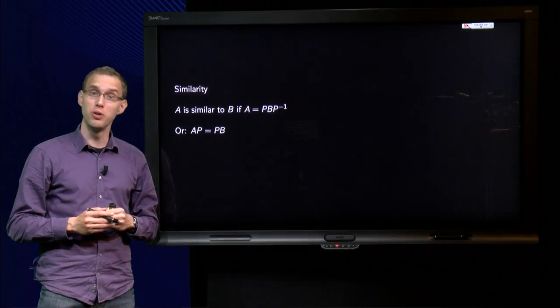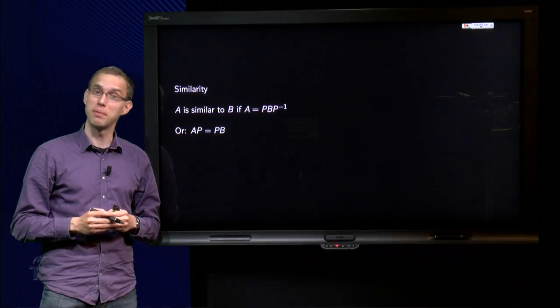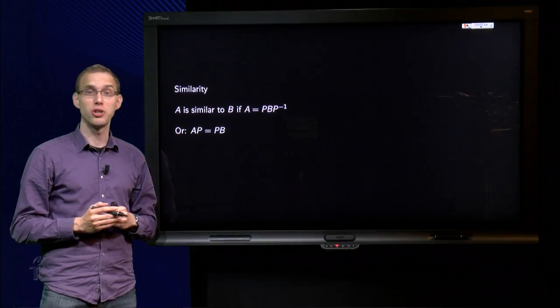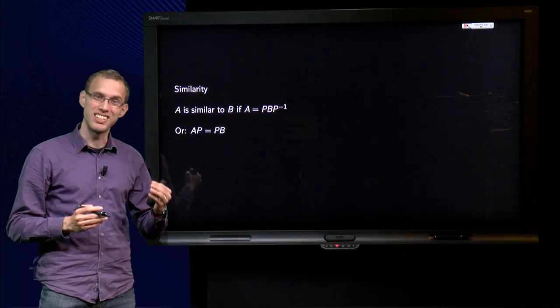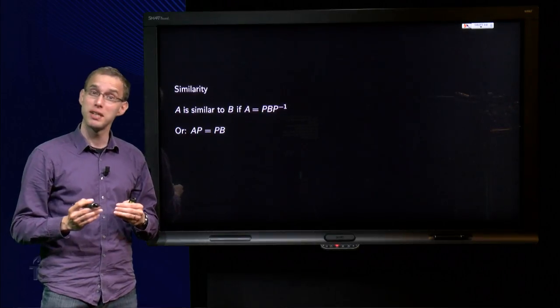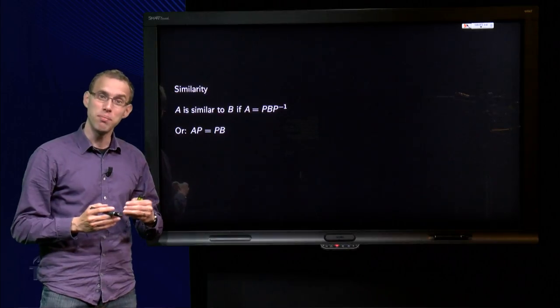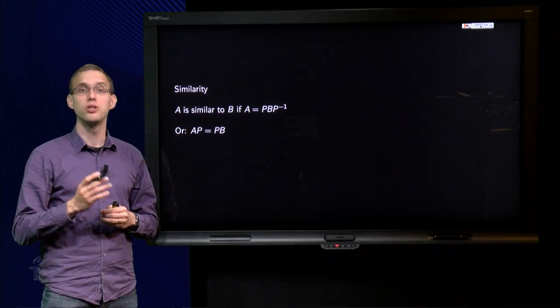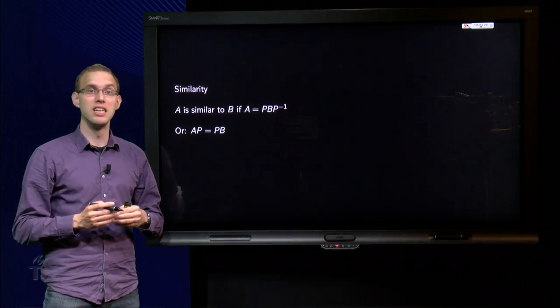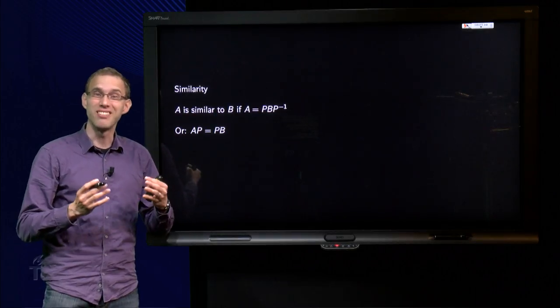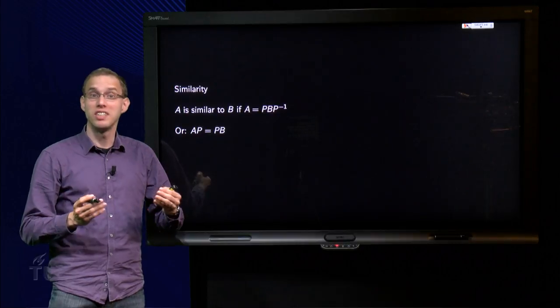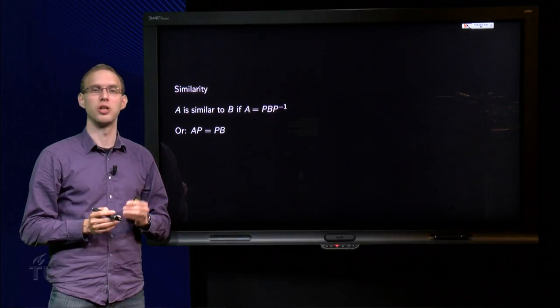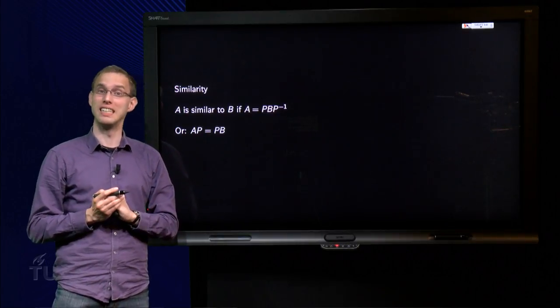Some words which we use in normal language can have a meaning in mathematics too. We already saw that in the case of independent, for example. We have something similar for the word similar. The word similar is also used in mathematics. Two matrices can be similar. So this will probably mean that they are kind of the same, but how exactly? And what does this have to do with eigenvalues and eigenvectors? Well, that is what you will learn in this video.